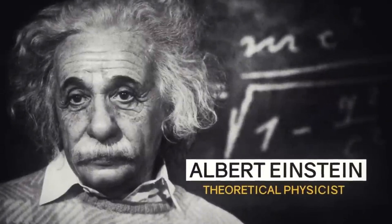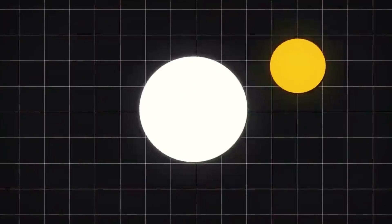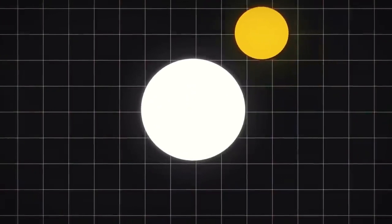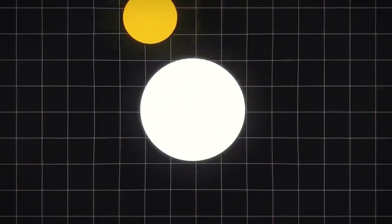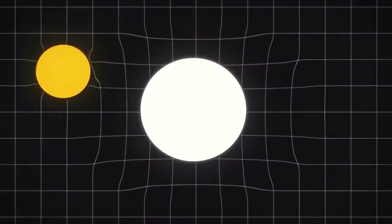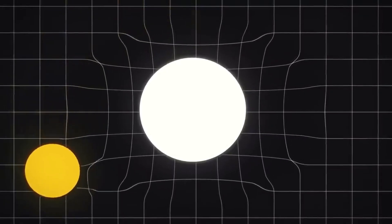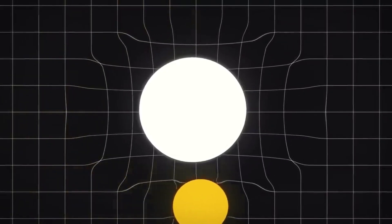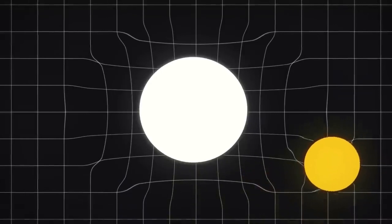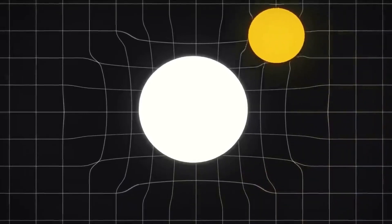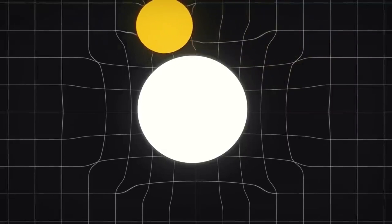Einstein transformed our understanding of gravity. He said gravity isn't a force at all. It's the result of curved space-time. Mass and energy cause space-time to bend, and objects move along paths in this curved geometry. That curvature, that shape of space, is the gravitational field.